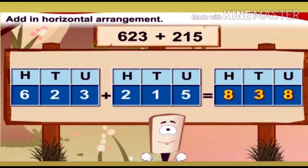Next sum: 623 plus 215. 623 means 6 hundreds, 2 tens, and 3 units. Plus 215 is 2 hundreds, 1 ten, and 5 units. Units column: 3 units plus 5 units is 8, write 8. Tens column: 2 tens plus 1 ten is 3, write 3 in the tens column. Hundreds column: 6 hundreds plus 2 hundreds is 8 hundreds, write 8. The answer is 838.